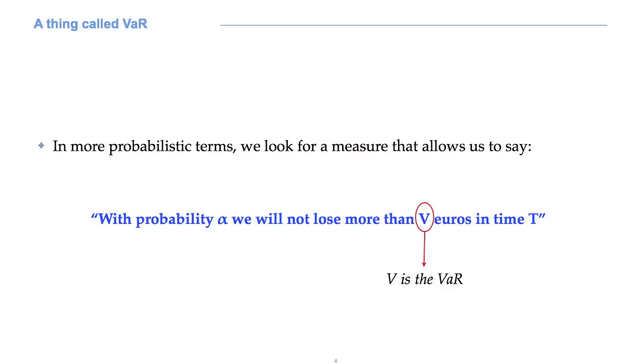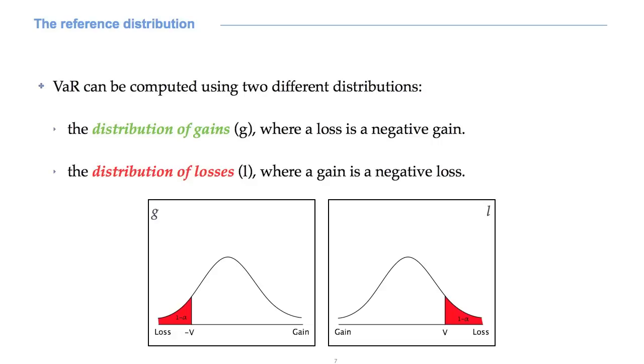The quantity capital V is the VAR. Alpha is the so-called confidence level, while capital T is the time horizon over which the value at risk is computed.